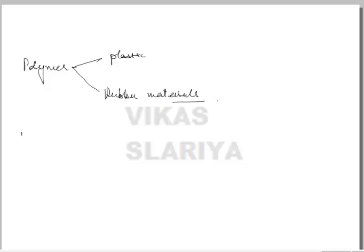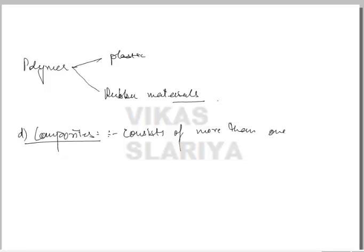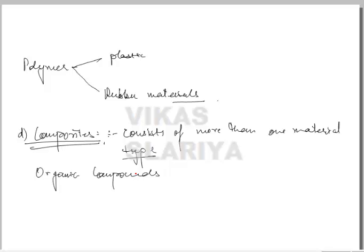Then we have composites. What are composites? A composite is a material which consists of more than one material type. Most of them are organic compounds. They have low densities and are flexible in nature.